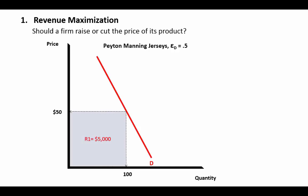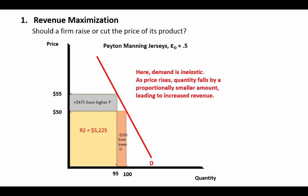With inelastic demand, if we increase price, the reduction in quantity will be proportionately less than the price increase. Increasing price by 10% means the reduction in quantity is only 5%. Revenue is now $5,225. The increase in revenue from the higher price more than offsets the reduction in revenue from lower quantity. Costs are also lower because we're selling fewer items, so it's a no-brainer: go ahead and increase that price. With inelastic demand, if you increase price, quantity falls by a proportionally smaller amount, leading to greater revenue.